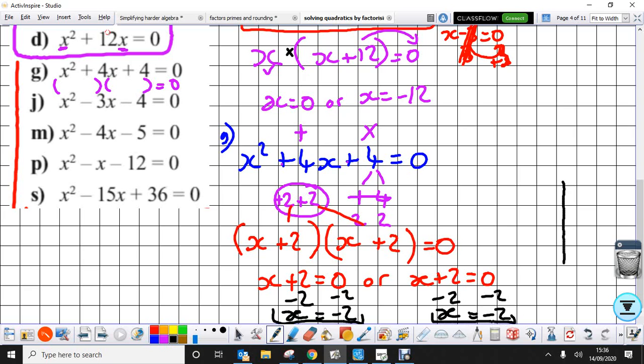So if I was to plot that graph, there's my graph, my x axis, going this way, and my value is negative 2, negative 1, negative 2, so at that point there, my graph would come down, just touch, and go back up again.